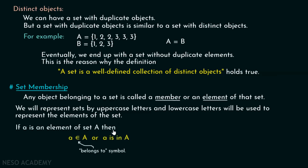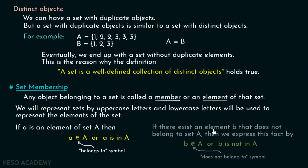If 'a' is an element of set A, then we say that 'a' belongs to A. This symbol is called the 'belongs to' symbol. So 'a' belongs to A, or we can say 'a' is in A. If there exists an element 'b' that does not belong to A, then we express this fact by saying 'b' does not belong to A. This symbol is called the 'does not belong to' symbol.